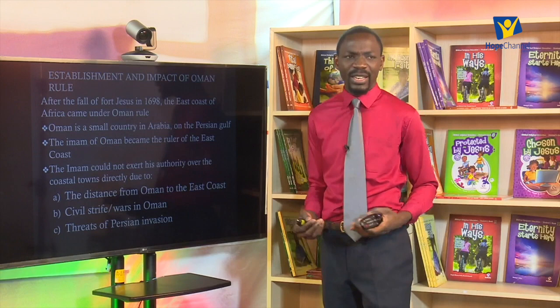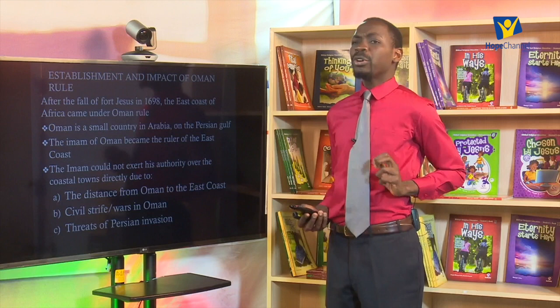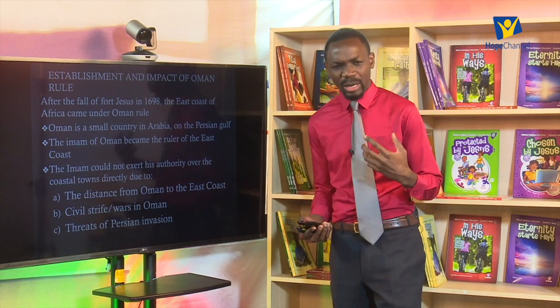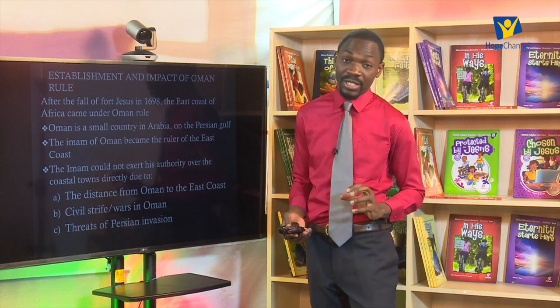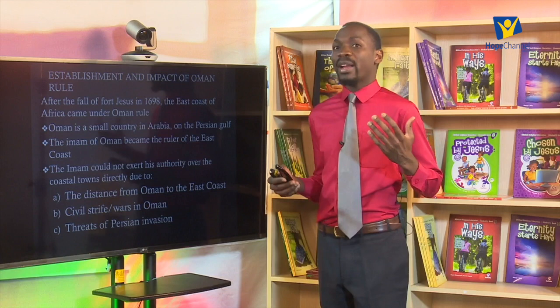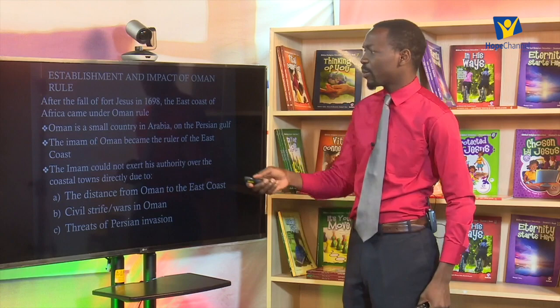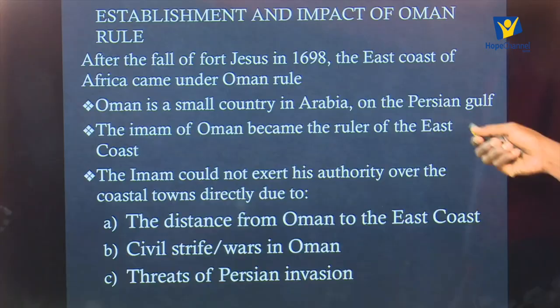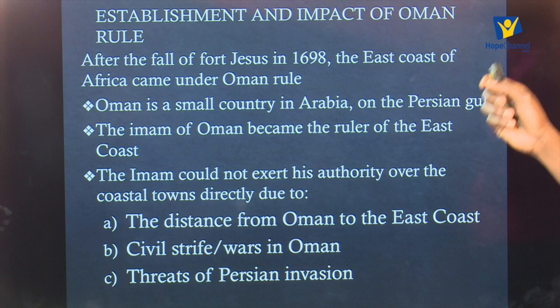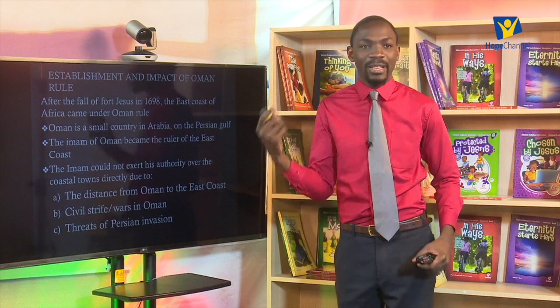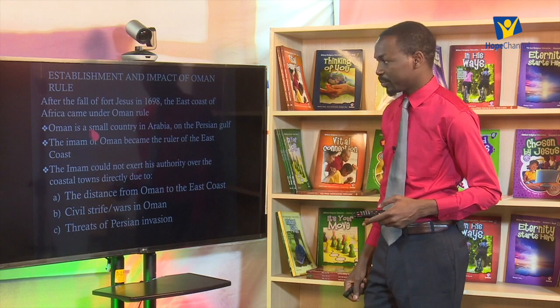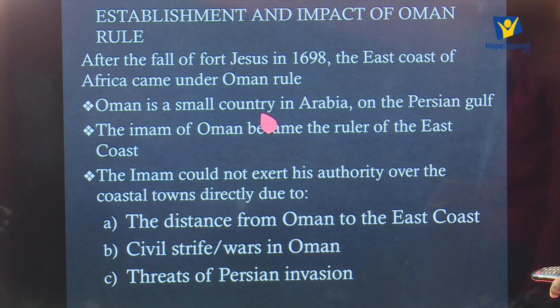So in 1698, having looked at the Portuguese rule, the Omani Arabs came and captured Fort Jesus, putting it under siege. After the capturing of Fort Jesus, the Omani Arabs began to establish their rule on the East African coast. After its fall in 1698, the East Coast of Africa came under Omani rule. These are Arabs from Oman — a small country in Arabia on the Persian Gulf.